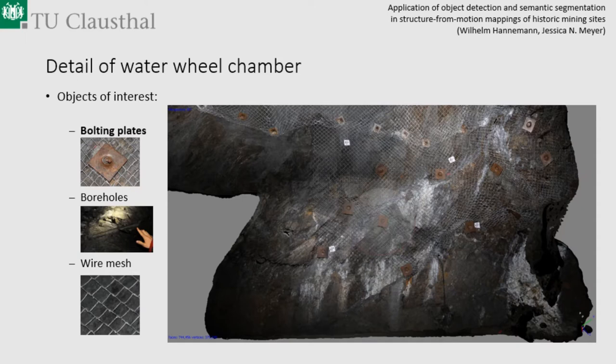Now I will come to the real topic today: the application of object detection and semantic segmentation. Here is an image of one water wheel chamber. This chamber is about 10 meters long, 5 meters high and wide, and on this face wall are several objects of interest. There are metal bolting plates, which are a modern addition, but we use them as a test example for object detection. There are also boreholes from black powder blasting, which are of interest for archaeologists, and tool marks.